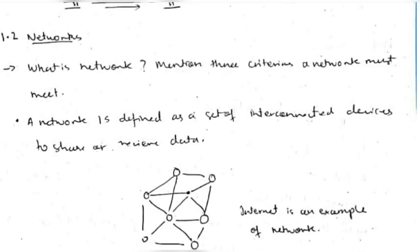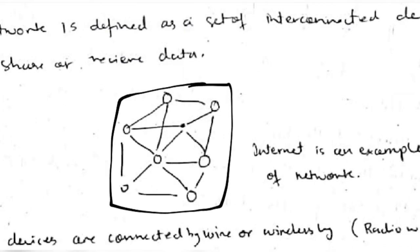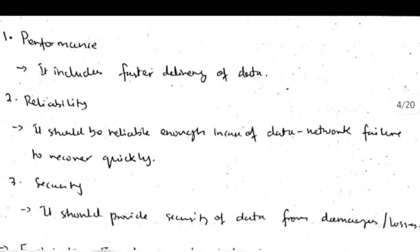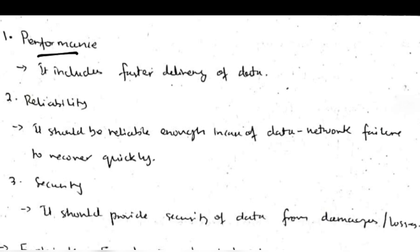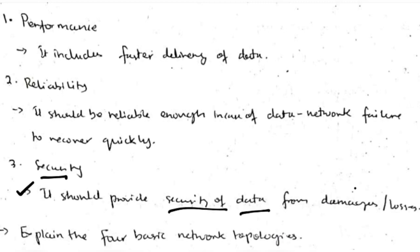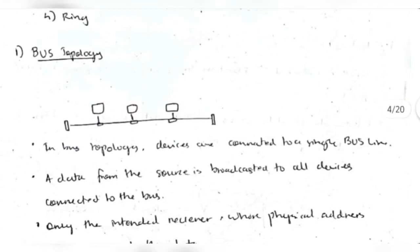A network is a connection of devices that can share information. The internet is an example of a network. There are three criteria a network should fulfill: performance (faster delivery of data), reliability (quick recovery in case of failure), and security (protecting data from damage or loss). There are four ways devices can be connected: mesh, star, bus, and ring topologies.